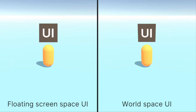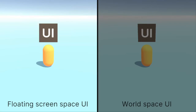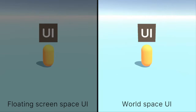The first difference we already talked about: making the UI follow the capsule. When using FloatingScreenSpaceUI, we need to set the UI position manually each frame. Using WorldSpaceUI, on the other hand, the positioning is handled automatically. The only thing we need to do is to make the UI a child of the capsule.